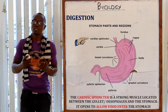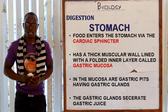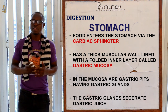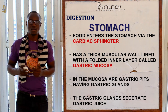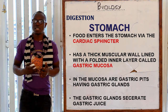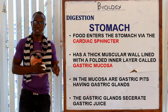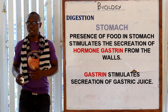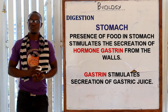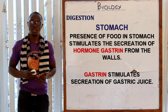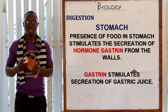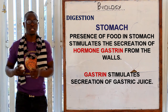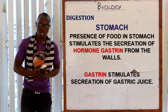The stomach has a muscular wall lined with folded inner layers called the gastric mucosa. Within the gastric mucosa are gastric pits containing gastric glands. The presence of food in the stomach stimulates the secretion of the hormone gastrin from the stomach walls, which in turn stimulates the gastric glands to secrete gastric juice.